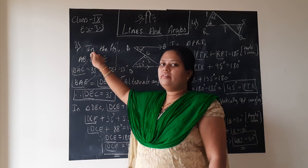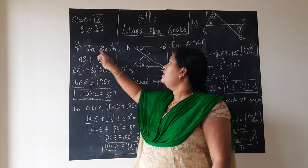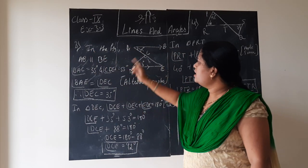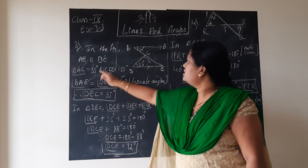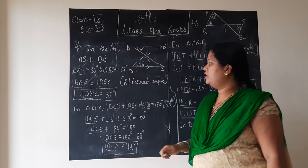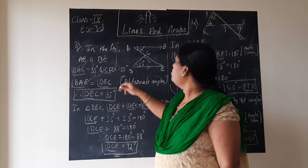Let us write the given data. In the figure, AB is parallel to DE, angle BAC is 35 degrees, and angle CDE is 53 degrees.